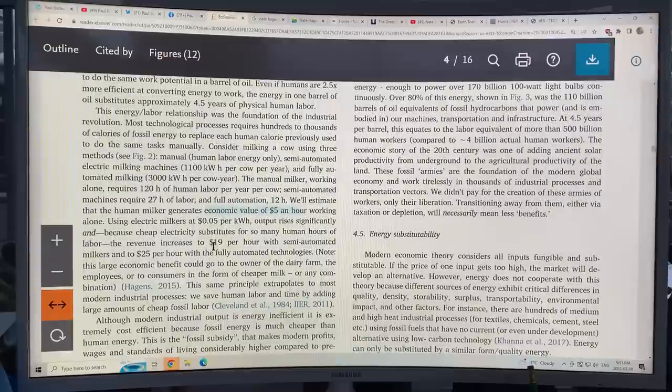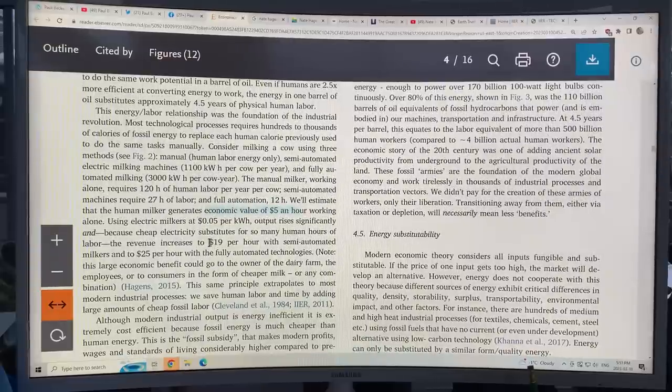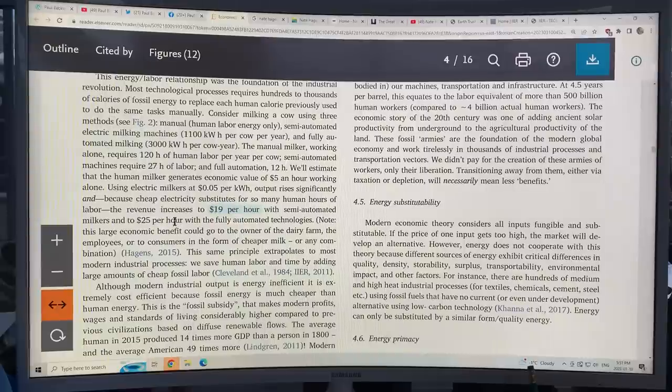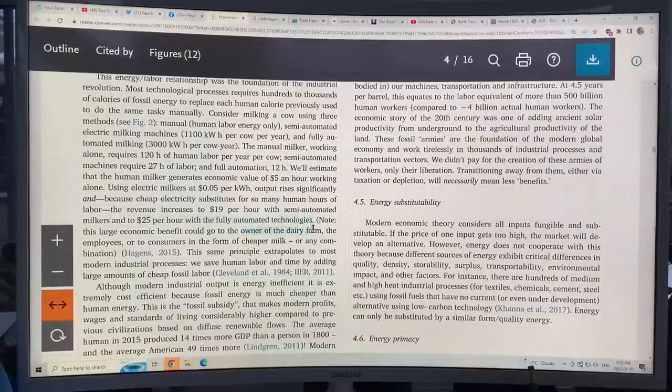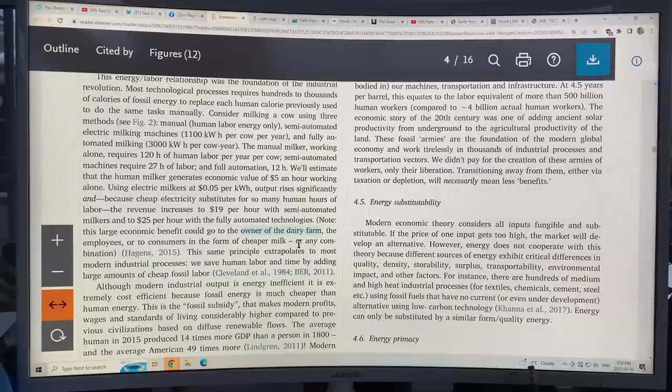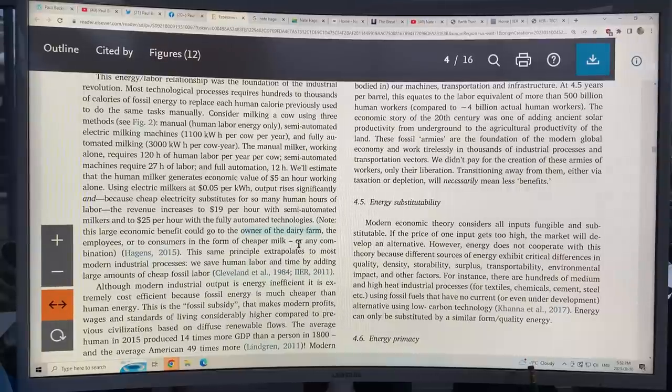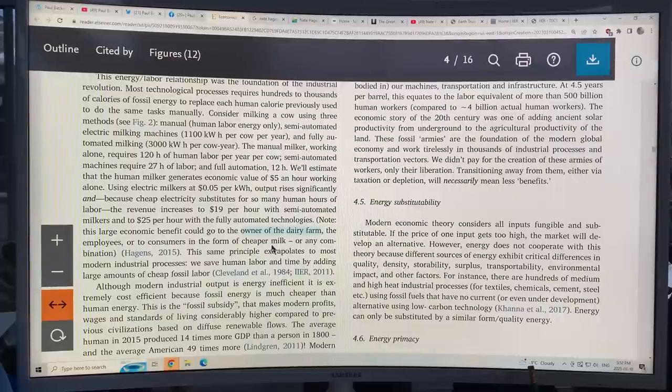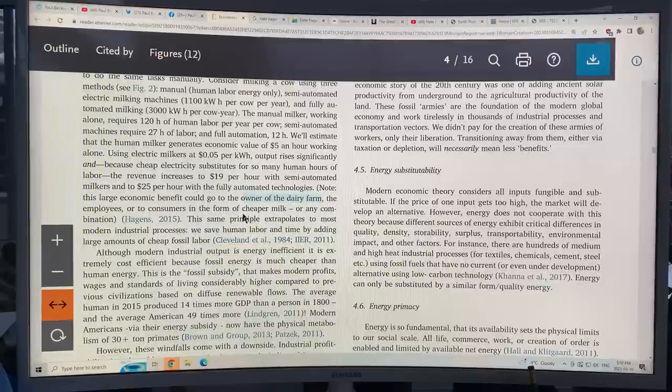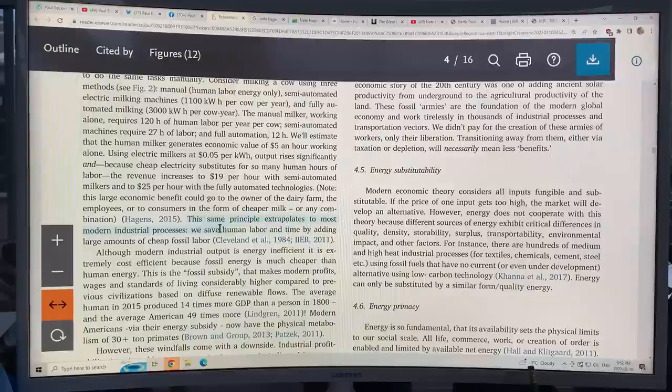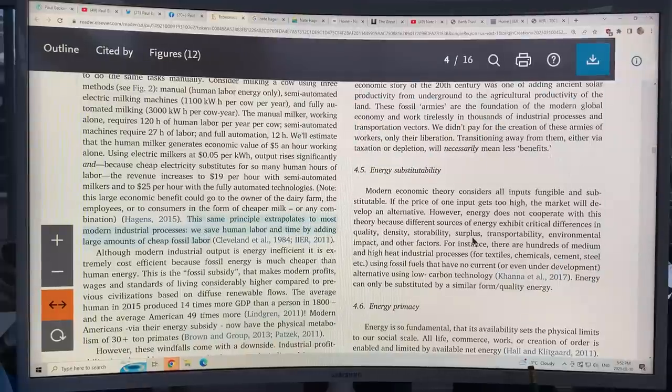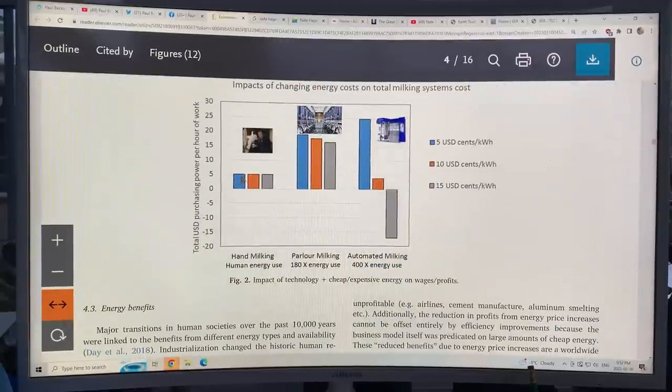The manual milker working alone requires 120 hours of human labor per year per cow. Semi-automatic machines, 27 hours. Full automation, 12 hours. If you estimate that the human milker generates an economic value of five bucks an hour, the electric milkers would be much higher than that. So you can see here the human milker, and this is if the cost of energy is varied.